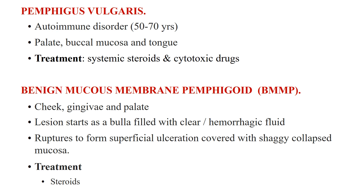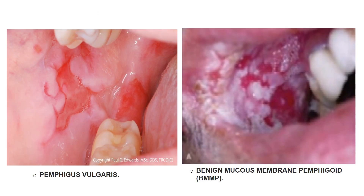Benign mucous membrane pemphigoid is also an autoimmune disorder. Mucosal lesions involve the cheek, gingiva, and palate, with the conjunctiva being the next important site. Lesions usually start as bullae filled with clear or hemorrhagic fluid which rupture to form superficial ulcerations covered with shaggy collapsed mucosa. Skin lesions may be absent. Treatment consists of steroids. This picture is for pemphigus vulgaris and benign mucous membrane pemphigoid.